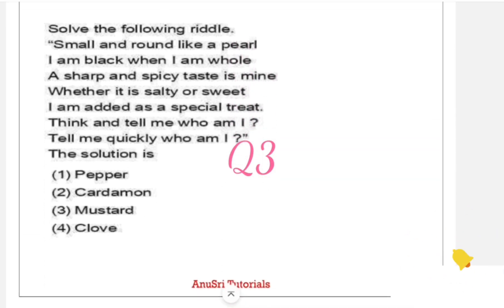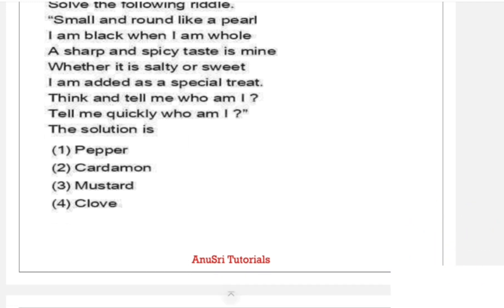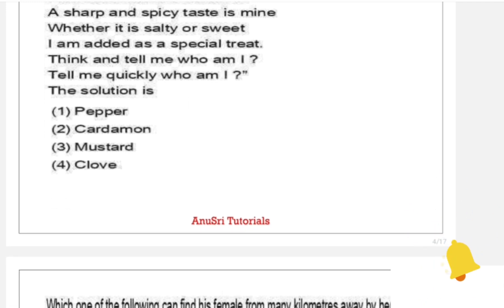Solve the following riddle: Small and round like a pearl, I am black when I am whole, a sharp and spicy taste is mine. Whether it is salty or sweet, I am added as a special treat. Think and tell me who am I? Solutions are: First option Pepper, Second cardamom, Third mustard, and fourth clove. Pepper is the answer.